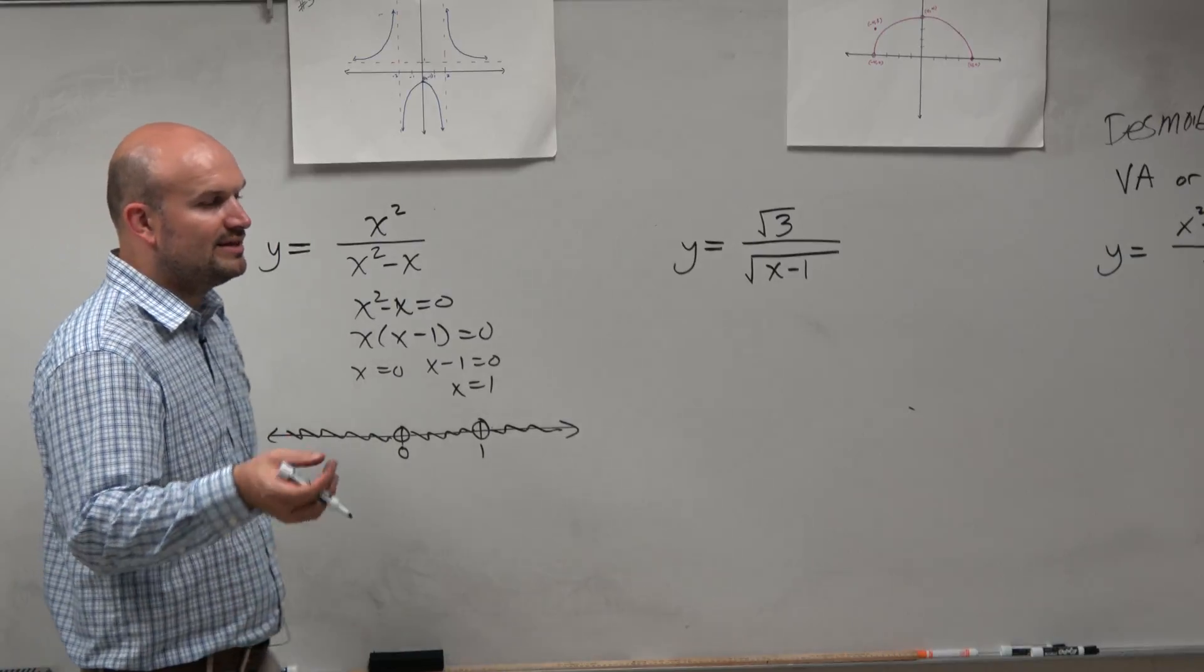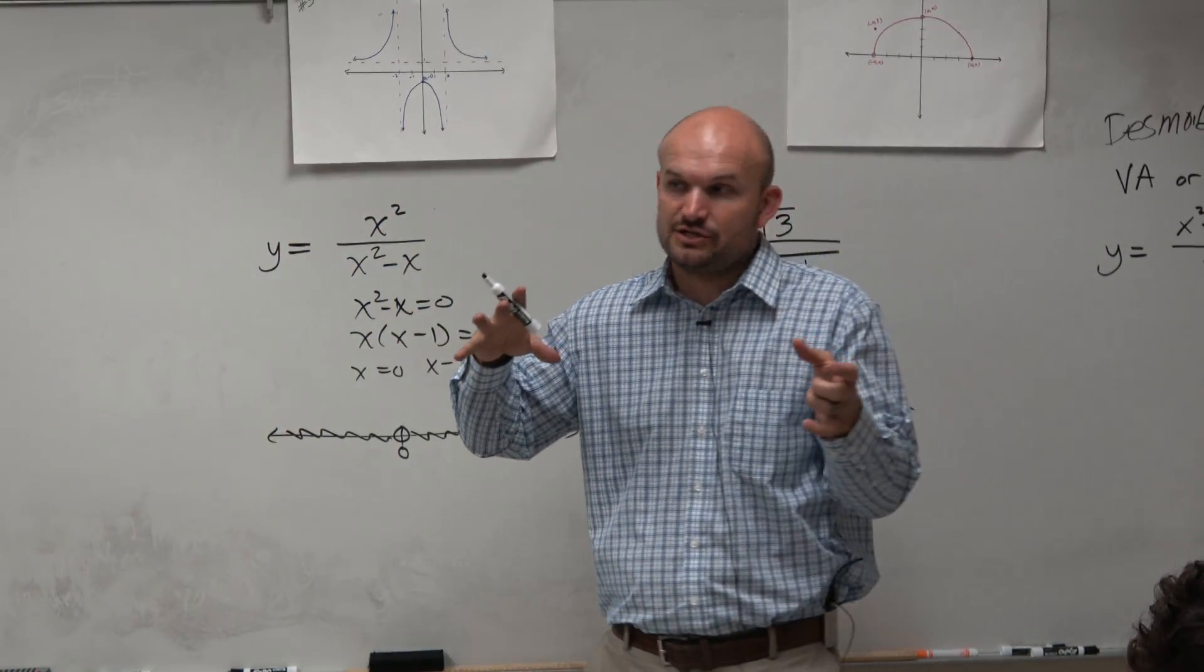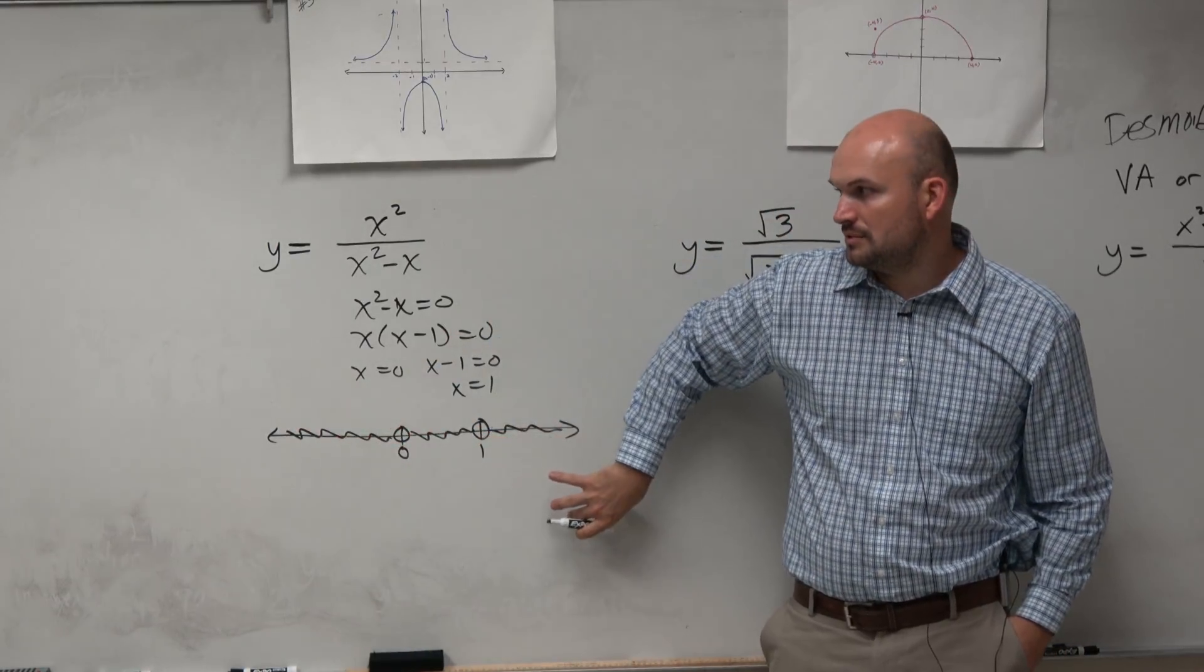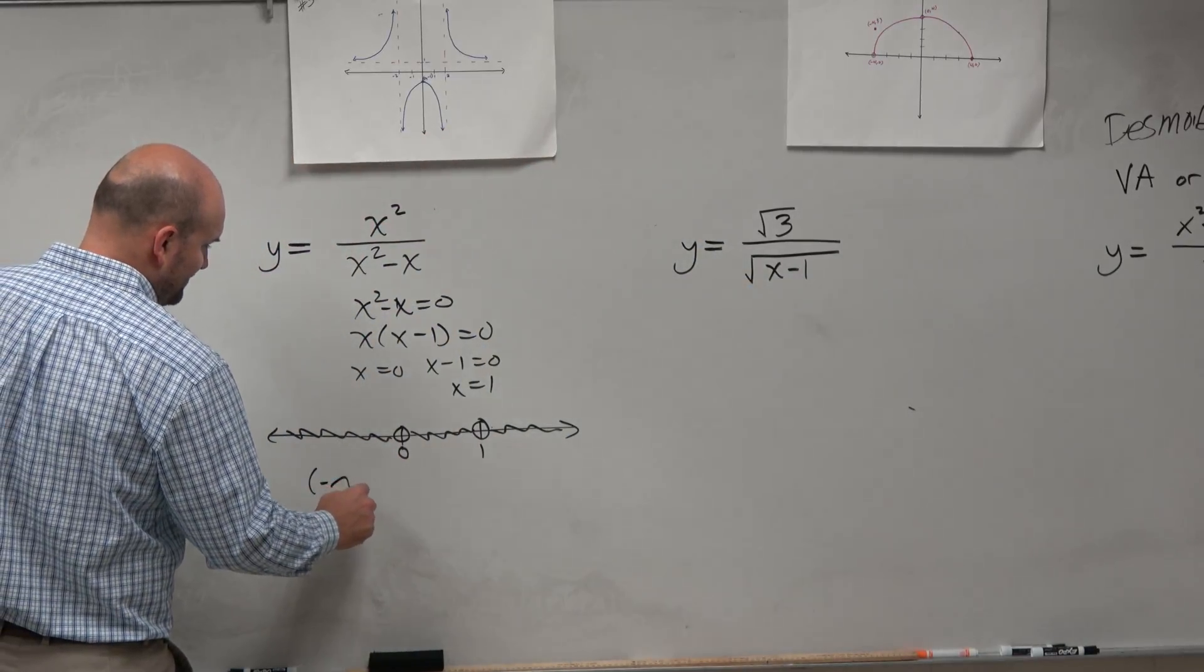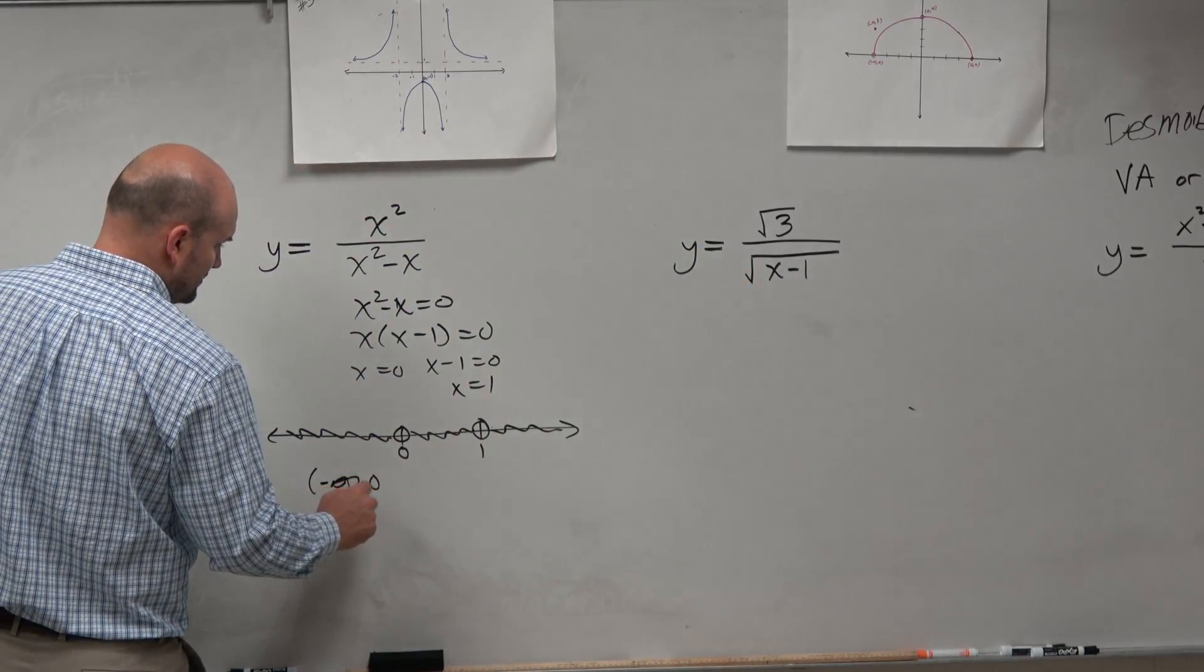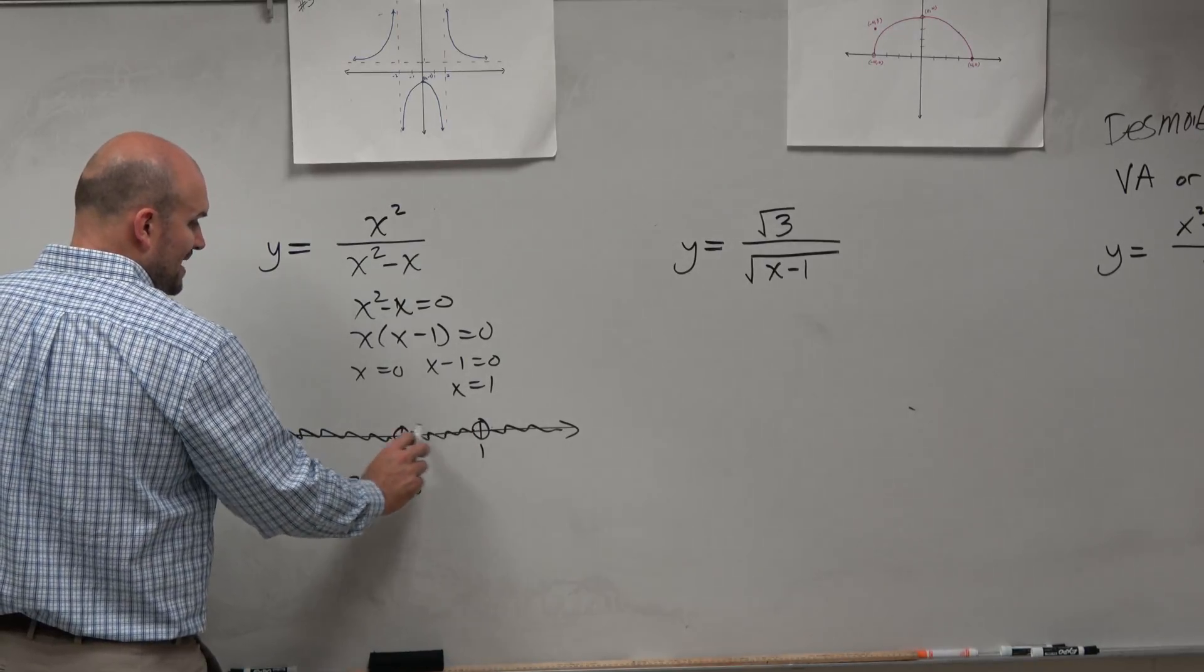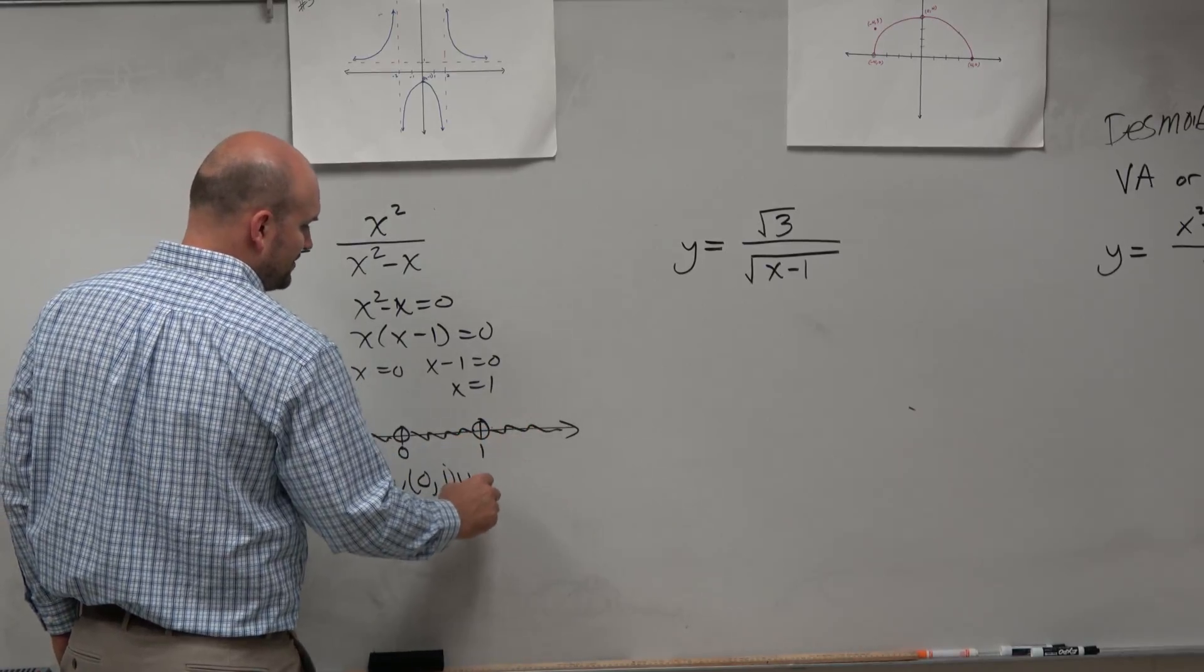So again, if you want to write the domain and you have a function that's broken up from different discontinuities, just write the domain of each interval. So the interval of this domain would be negative infinity to 0, then union the domain of this interval, 0 to 1, and then union 1 to infinity.